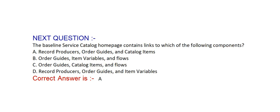Next question: The baseline service catalog homepage contains links to which of the following components? Option A: record producers, order guides, and catalog items. Option B: order guides, item variables, and flows. Option C: order guides, catalog items, and flows. Option D: record producers, order guides, and item variables. Correct answer is Option A, record producers, order guides, and catalog items.